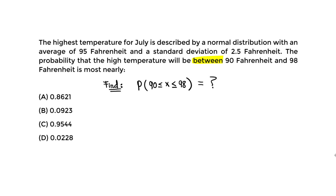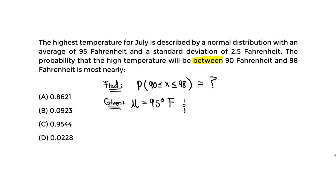What we're given are two values: the average and the standard deviation. The average — I'll denote it as mu, the population average — is 95 degrees Fahrenheit. We're also given the standard deviation, which is sigma. Sigma is 2.5 degrees Fahrenheit.